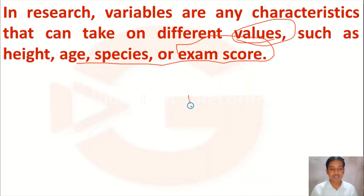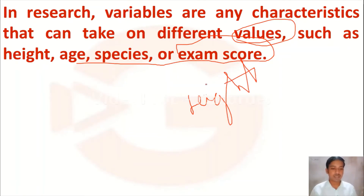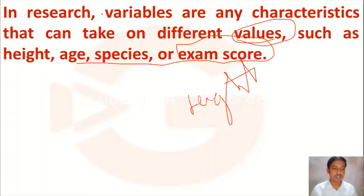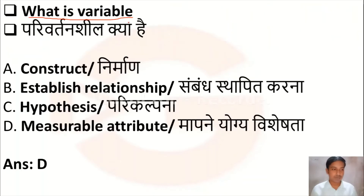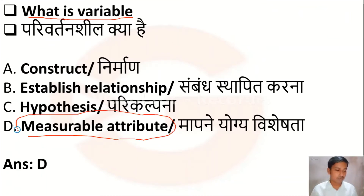Height is a changing variable, and exam score is also a changing variable — sometimes you may get 75 marks, sometimes 60 marks. The values which change are known as variables. A variable is a measurable attribute, meaning we can measure the change.